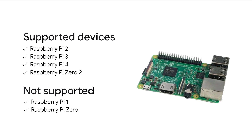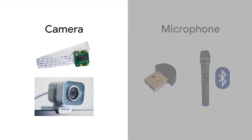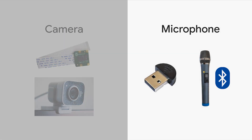Next, you will need to plug in a camera and a microphone to your Raspberry Pi. For recording video, you can use either a Raspberry Pi camera module or a USB camera. And for recording audio, an easy option would be to use a USB microphone. Raspberry Pi 3 and 4 also support Bluetooth microphones, so that's another option for you.